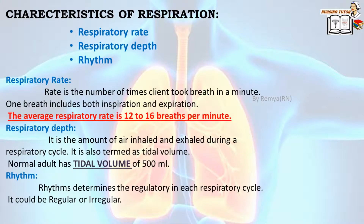Characteristics of respiration include respiratory rate, respiratory depth, and rhythm. Respiratory rate is the number of times a person breathes in a minute — one minute includes both inspiration and expiration; the average respiratory rate is 12 to 16 breaths per minute. Respiratory depth is the amount of air inhaled and exhaled during a respiratory cycle, also termed tidal volume; a normal adult has a tidal volume of 500 ml. Rhythm determines the regularity of each respiratory cycle and could be regular or irregular.